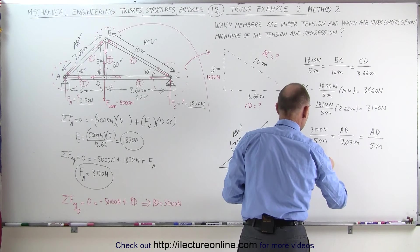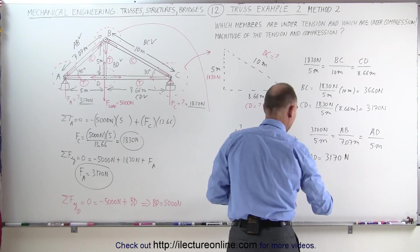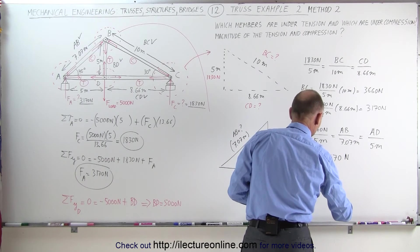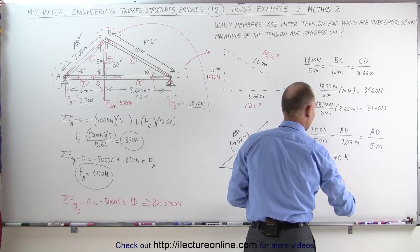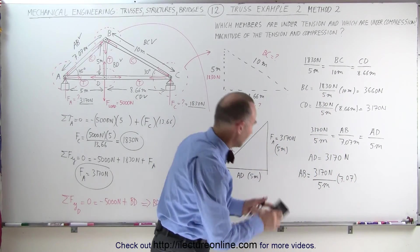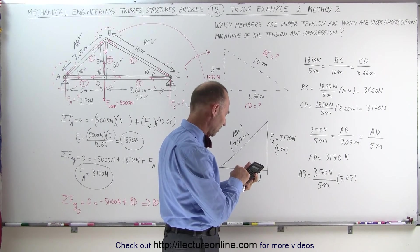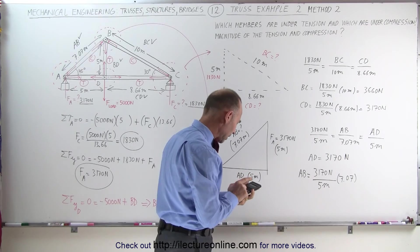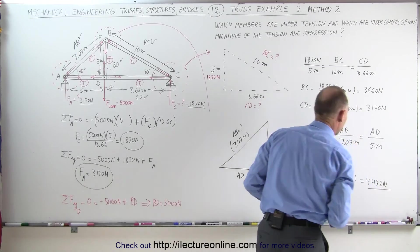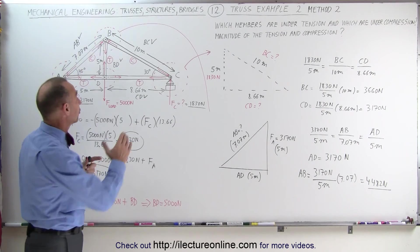And AB can be found by taking 3170 newtons divided by 5 meters and multiply it times 7.07. Let's see what we get there: 3170 divided by 5 times 7.07 and we get 4482 newtons.